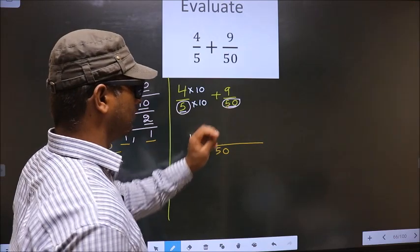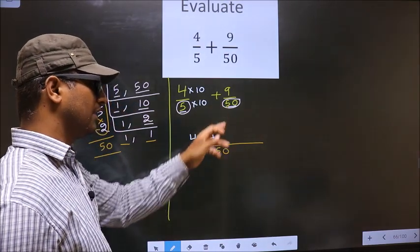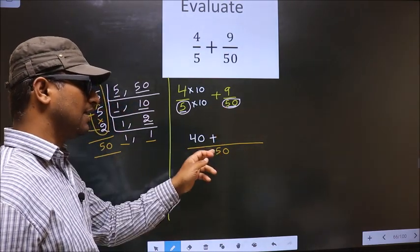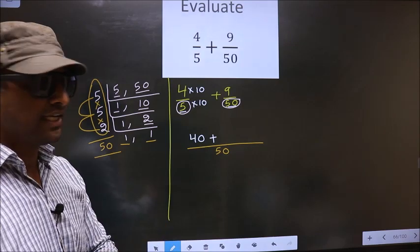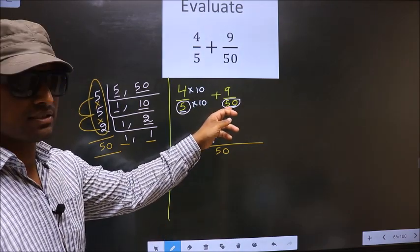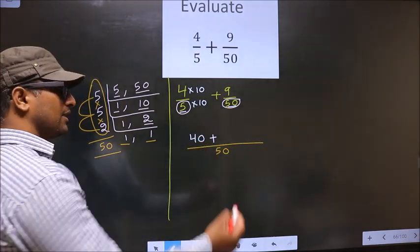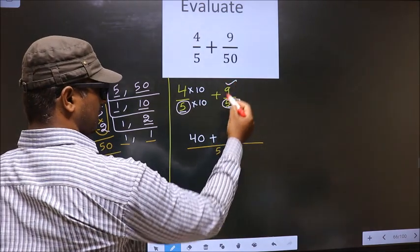Here we have 50. Here also 50. Both the numbers are same. So we don't need to multiply any number to this. So we should write the numerator as it is. That is 9.